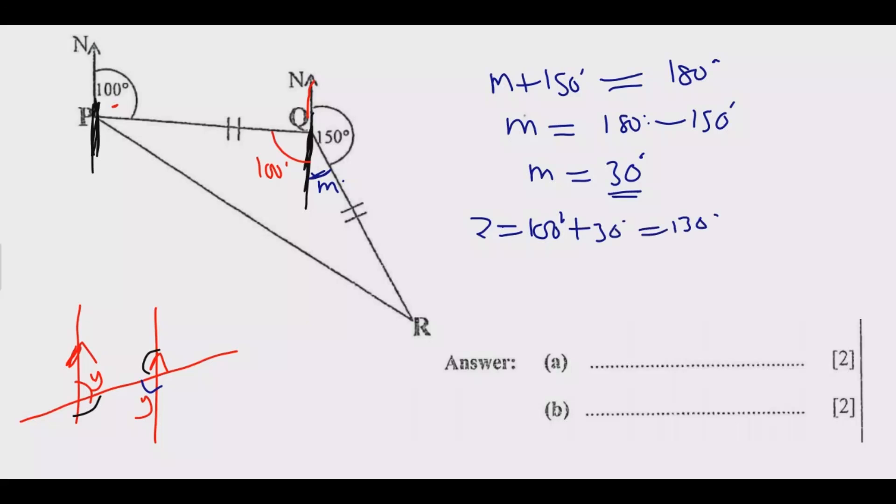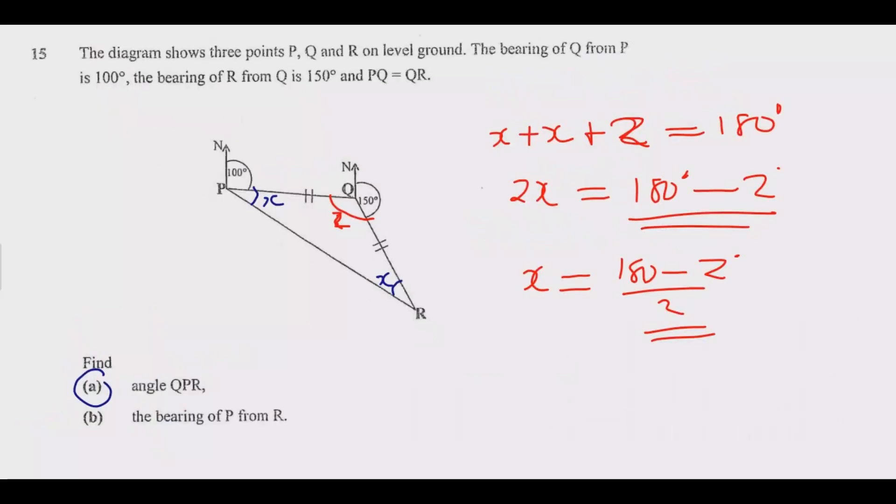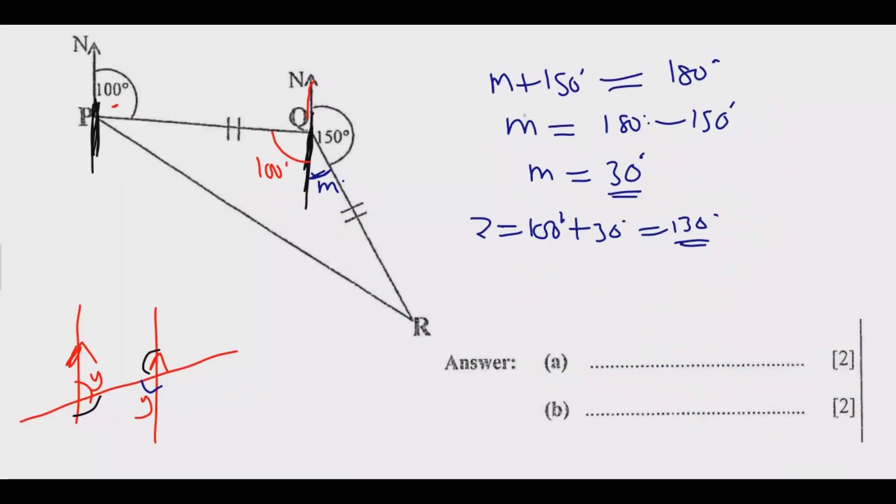Now we can find X. X equals 180 degrees minus 130 degrees over 2. Dividing these gives us 50 divided by 2, which equals 25 degrees. So 25 degrees is angle QPR. Write this nicely in your exam and you get these two marks.